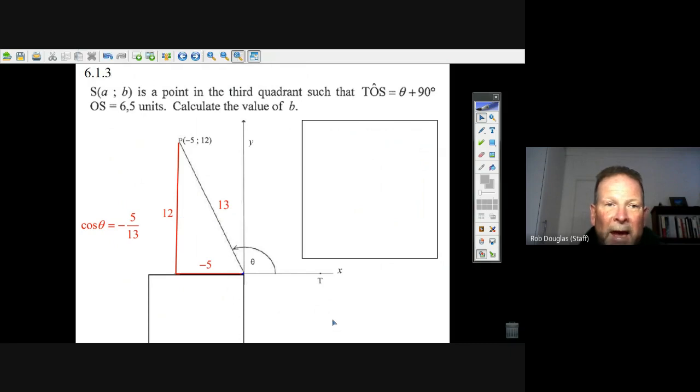They say there's a point S, and it's got coordinates of A and B. It's a point in the third quadrant. That means it's down here, and it's TOS. It goes to someplace down here. It's theta plus 90 degrees. So what I like to do is just sketch a little picture of it so that I can see it, and that's what I did down here. I sketched a picture.